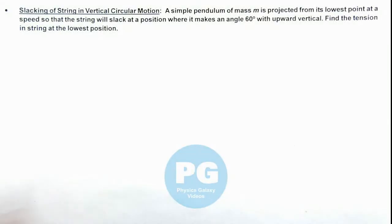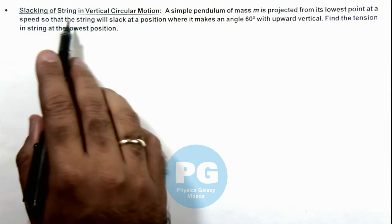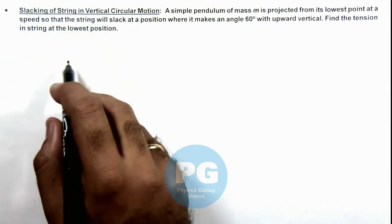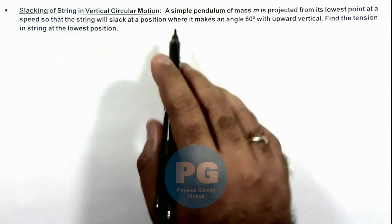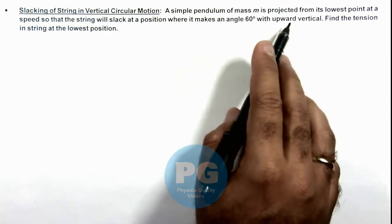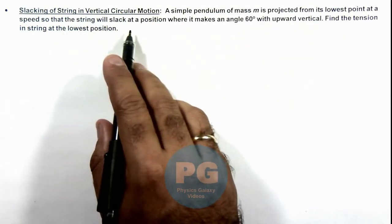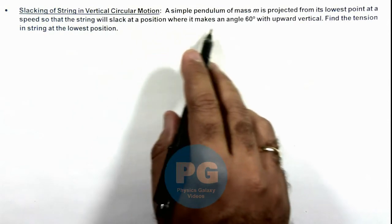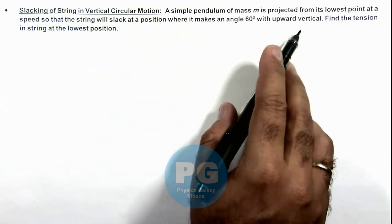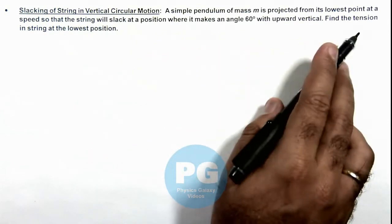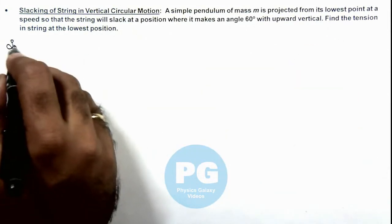In this illustration, we'll describe the slacking of string in vertical circular motion. Here we are given that a simple pendulum of mass m is projected from its lowest point at a speed so that the string will slack at a position where it makes an angle 60 degrees with upward vertical. We are required to find the tension in string at the lowest position.